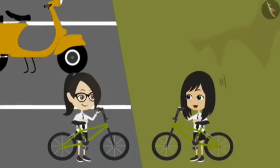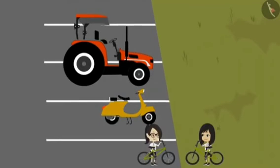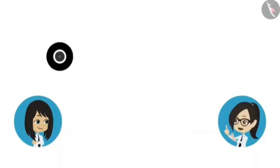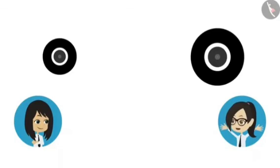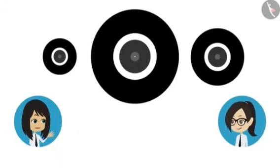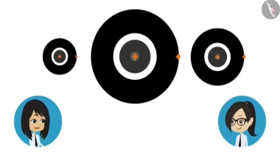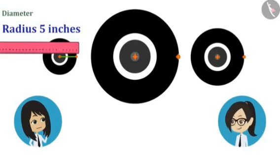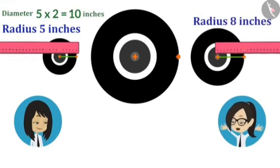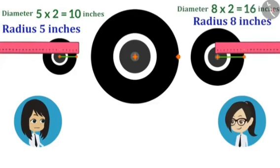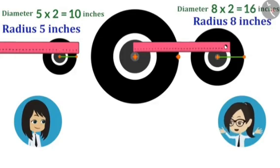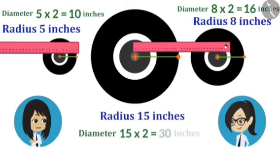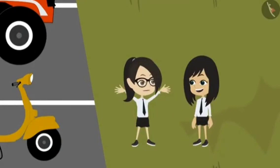Now that we have measured the wheels of the bicycle, why not measure the rest of the wheels as well? Here is the wheel of the scooter, this is the front wheel of the tractor, and this is the tractor's rear wheel. Let's find the centre for all wheels, then measure the distance from the centre to the boundary. The radius of the wheel of the scooter is 5 inches, meaning its diameter is 10 inches. The radius of the front wheel of the tractor is 8 inches, meaning its diameter is 16 inches. The radius of the largest rear wheel of the tractor is 15 inches, meaning its diameter is 30 inches. We took the measurement of all the wheels — now let's tell Sir.